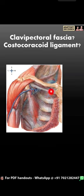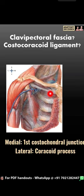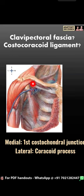In terms of side-to-side extent, on the medial aspect is the first costochondral junction and on the lateral aspect is the coracoid process. There is a thickened band of clavipectoral fascia in between these two points that is referred to as the costocoracoid ligament.